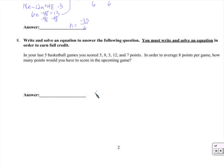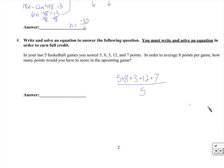We have to write an equation here — must write an equation. Five basketball games, those are your scores for the last five. You're going to average 8 per game after the next — the sixth — game. If I were going to find the average over the last five games, I'd add them up and divide by 5. But we want an average over six games, so we'll divide by 6. There's a sixth score we don't know — call it x. After adding them up and dividing by 6, it should come out to 8.